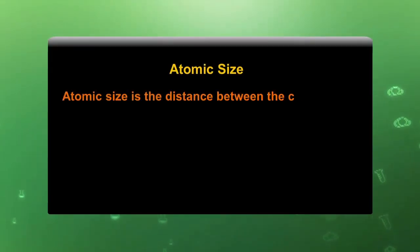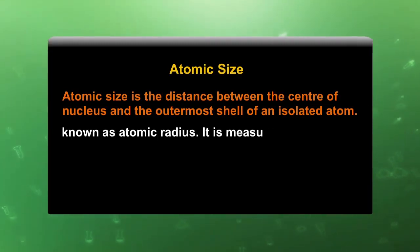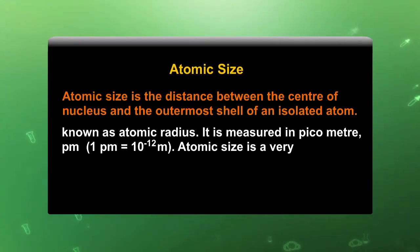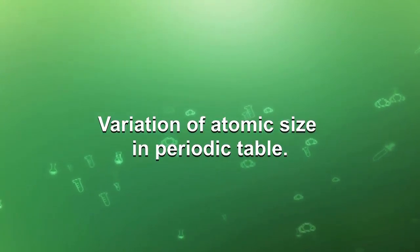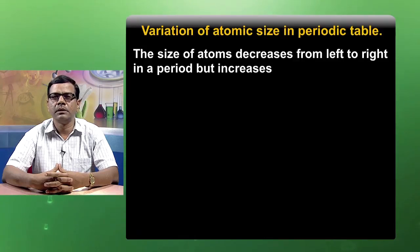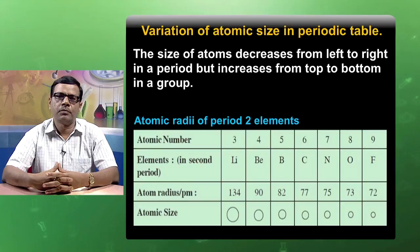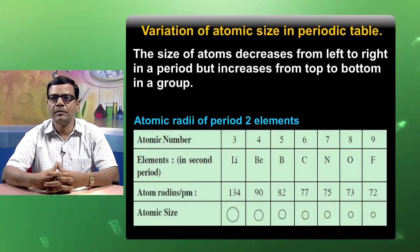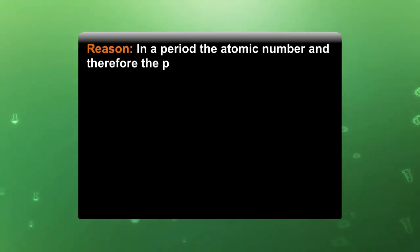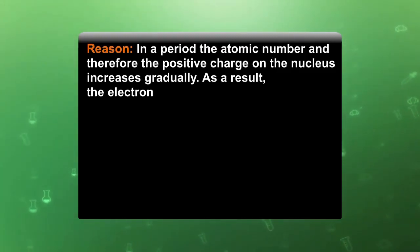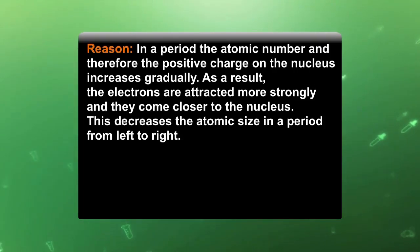Atomic size is the distance between the center of the nucleus and the outermost shell of an isolated atom. It is also known as atomic radius and is measured in picometers. Atomic size is a very important property because it relates to many other properties. The size of an atom decreases from left to right in a period. In a period, the atomic number and therefore the positive charge of the nucleus increases gradually, so electrons are attracted more strongly and come closer to the nucleus, decreasing the atomic size from left to right.